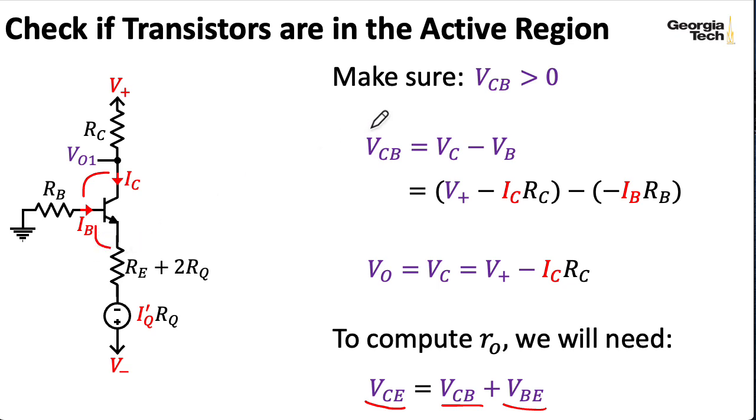Now, of course, for the transistor to be in the active region, this voltage between the base and the emitter needs to be positive, but we're just assuming that.